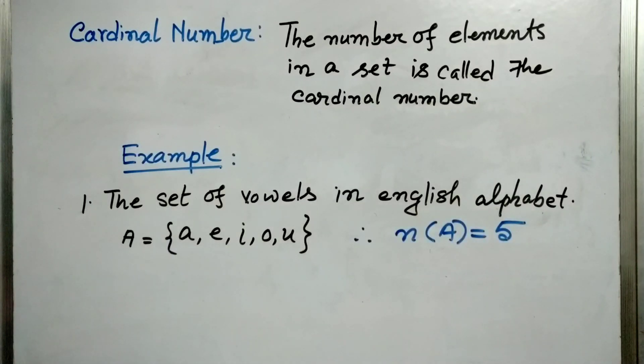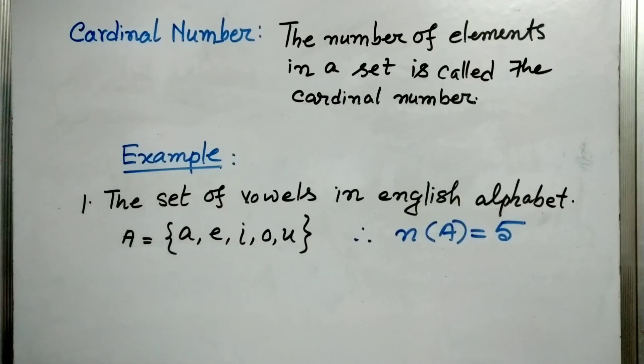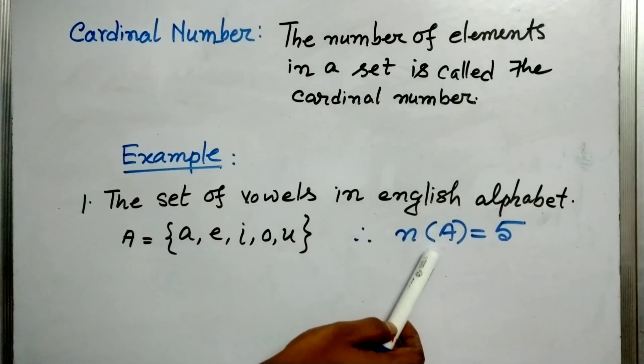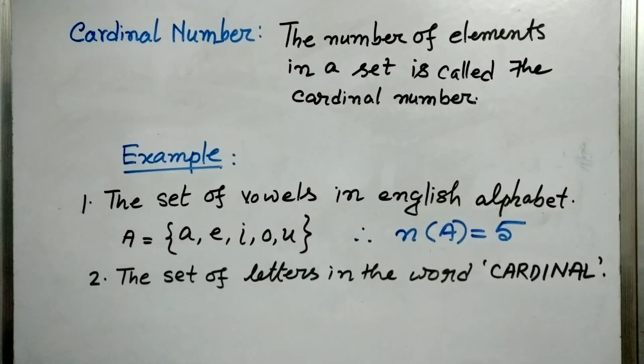So here we can call the set as A and A is equal to {a, e, i, o, u}. Now if we count the number of elements, there are 1, 2, 3, 4, 5 elements. So the cardinality of A, that is the cardinal number of A, is 5 and we express this cardinal number in this form N(A).